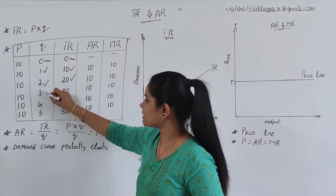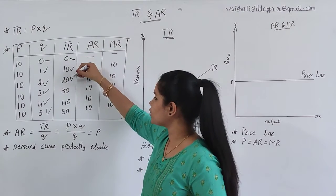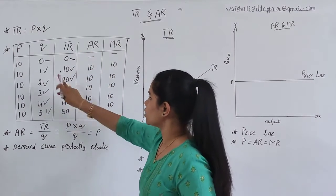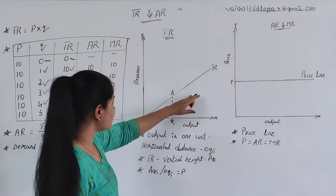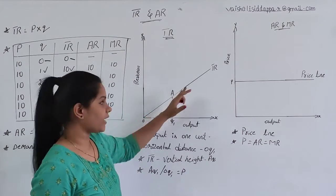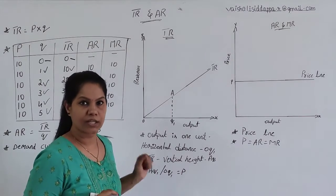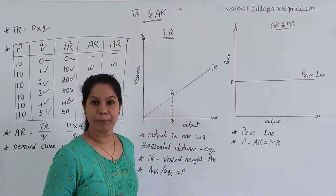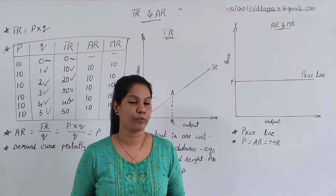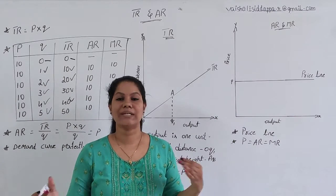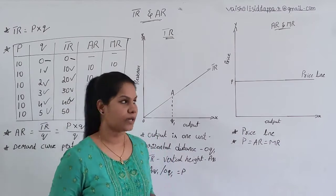As we can see, quantity is continuously increasing to 1, 2, 3, 4, 5, and total revenue is also increasing: 10, 20, 30, 40, and 50. The relationship between quantity and total revenue is definitely a positive relationship. That is the reason the total revenue curve is positive in shape — it is an upward moving slope. Total revenue is whatever returns you get after selling goods and services produced in a particular time period.